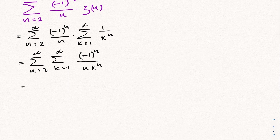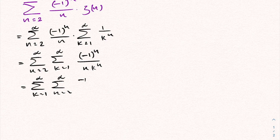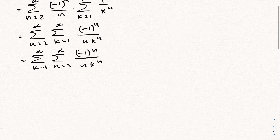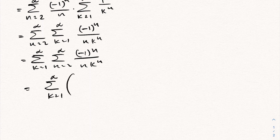Then we interchange the sigma notations, writing it as k equals 1 to infinity, n equals 2 to infinity, of minus 1 to the n over n times k to the n. Then we rearrange this double sum: k equals 1 to infinity, then the inner sum n equals 2 to infinity of minus 1 to the n.